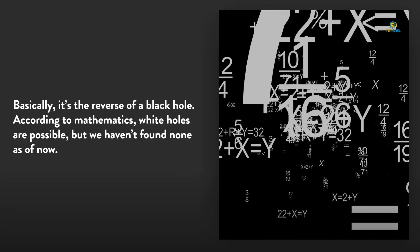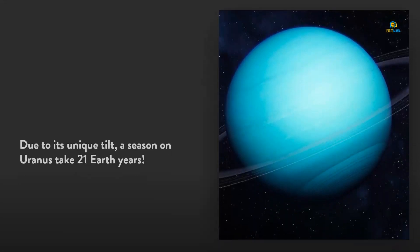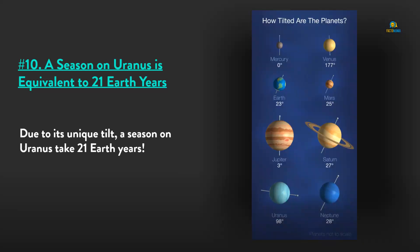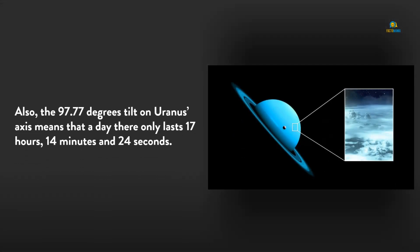Number 10: A season on Uranus is equivalent to 21 Earth years. Due to the unique tilt, a season on Uranus takes 21 Earth years. Also, a 97.77 degree tilt on Uranus's axis means that a day there only lasts 17 hours, 14 minutes, and 24 seconds.